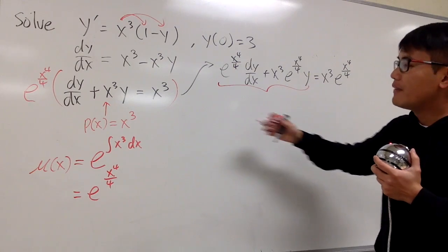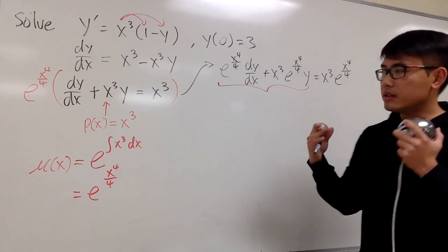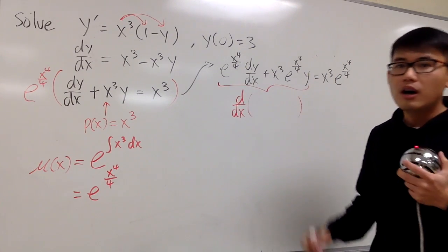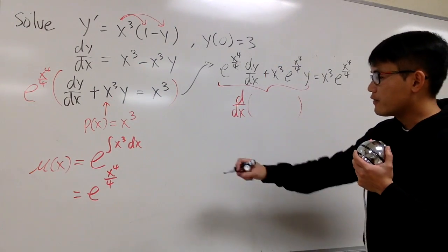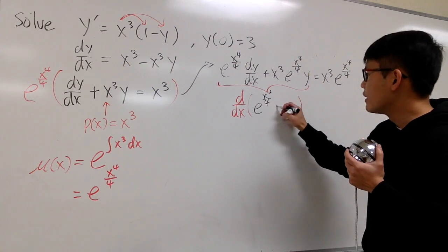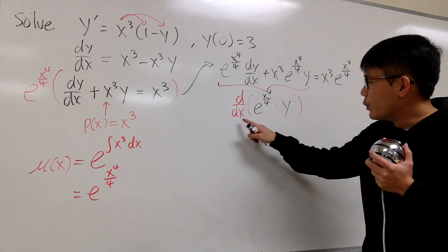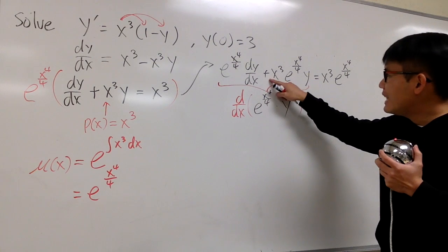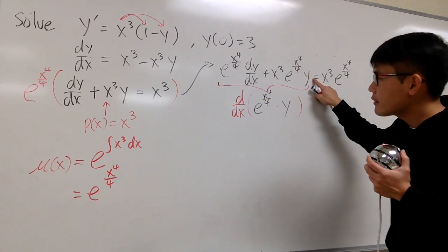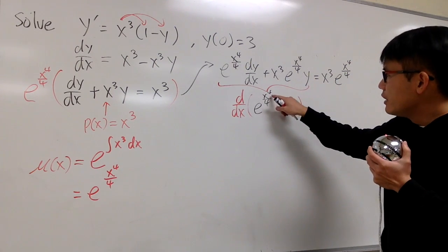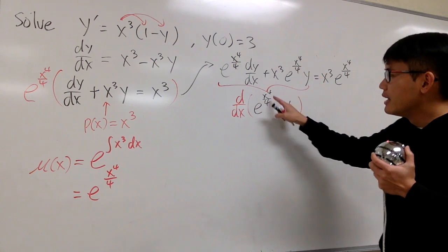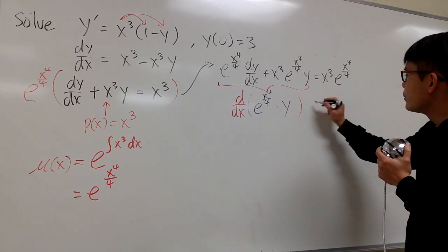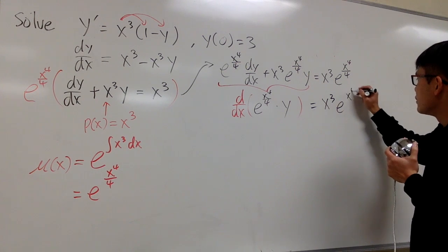The strategy is that after we multiply everything by mu(x), on the left-hand side we produce a derivative of a product of two functions. This right here is exactly the derivative of mu(x) times y, which is e to the x to the fourth power over 4 times y. Let's do a quick check. When we differentiate this, we use the product rule: we keep the first function and multiply by the derivative of the second, which is dy/dx, and we add it with the second function y times the derivative of the first. The derivative of e to the x to the fourth power over 4 keeps the exponential and multiplies by x to the third power — so that works out nicely.